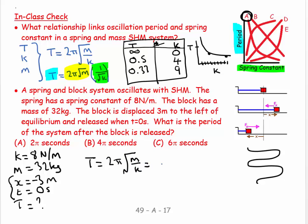My period equals 2π root m over k, which equals 2π root—m is 32, k is 8—which equals 2π root 4, so T equals 2π times 2.